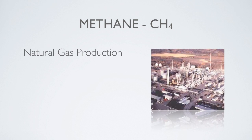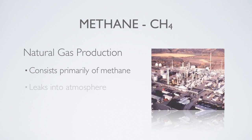Another large source of methane emissions is the production, processing, and distribution of natural gas. Natural gas consists primarily of methane, and during extraction, production, and piping through large systems, it often leaks into the atmosphere.